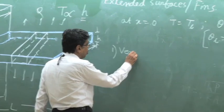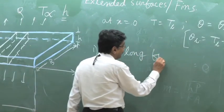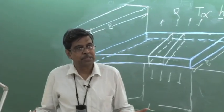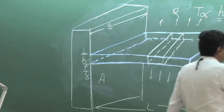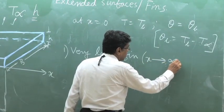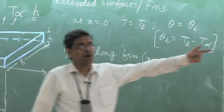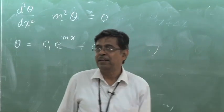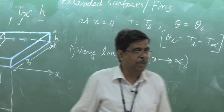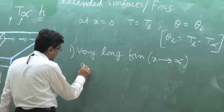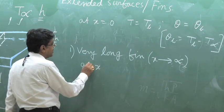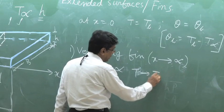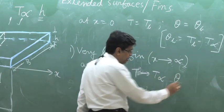One case: very long fin. Sometimes in a problem we say the fin is very long. Engineers are always smart — they take an approximation. They do not go like a mathematician. Very long means consider x tends to infinity. That means for a very long fin, as x tends to infinity, the extreme end of the fin will attain the environment temperature. So this boundary condition is written as x tends to infinity, T tends to T_infinity, and theta tends to 0.